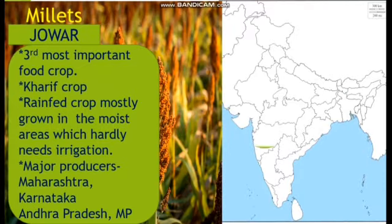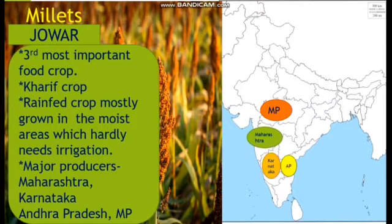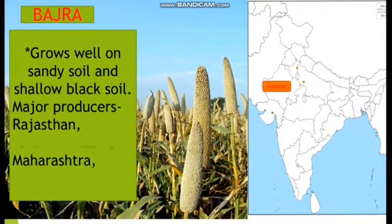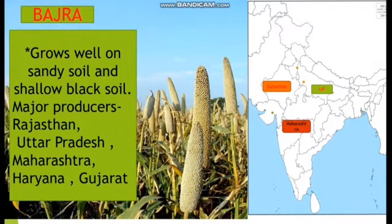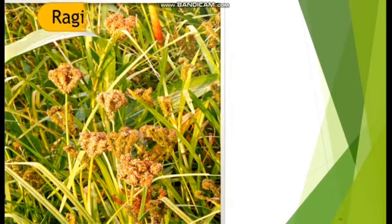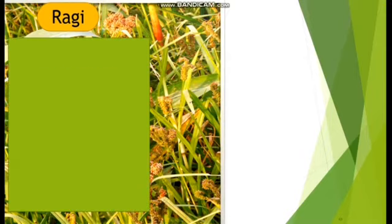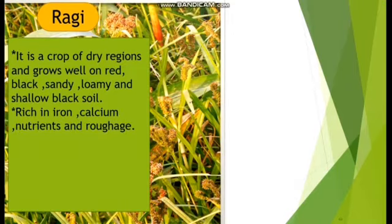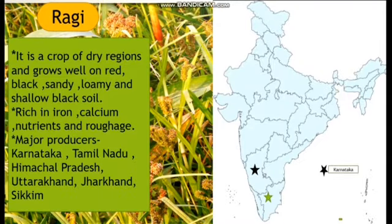Major jowar producing states are Maharashtra, Karnataka, and Madhya Pradesh. Bajra grows well on sandy soil and shallow black soil; major Bajra producing states are Rajasthan, Uttar Pradesh, Maharashtra, Haryana, and Gujarat. Ragi is a crop of dry regions and grows well on red, black, sandy loamy, and shallow black soil. Ragi is very rich in iron, calcium, nutrients, and roughage. Major Ragi producing states are Karnataka, Tamil Nadu, Himachal Pradesh, Uttarakhand, and Jharkhand.